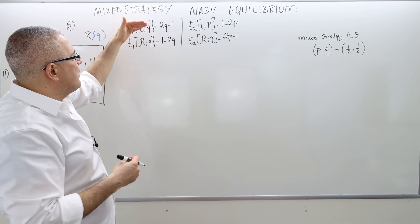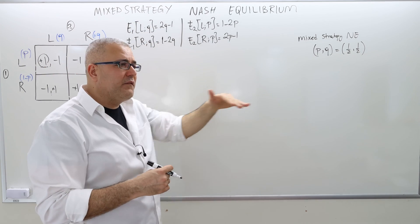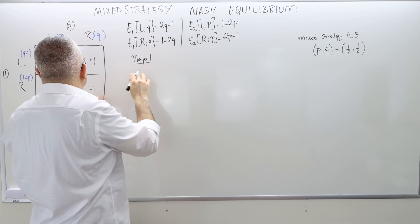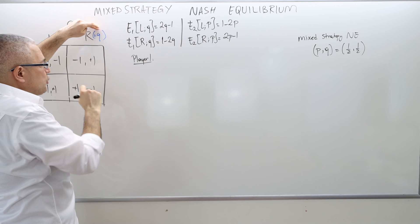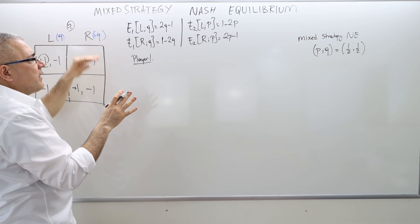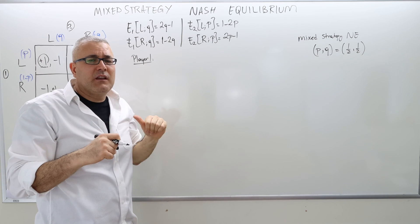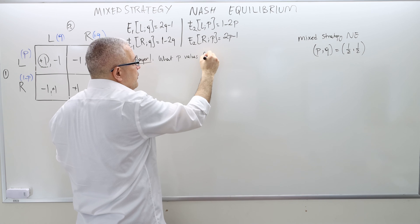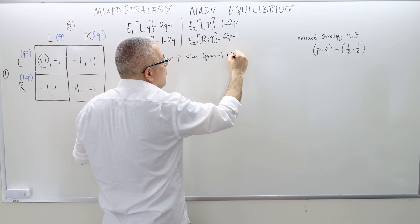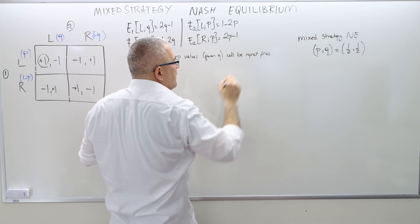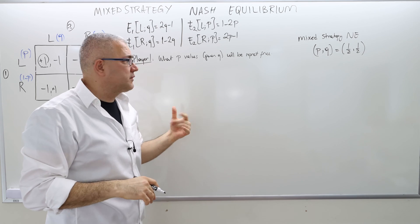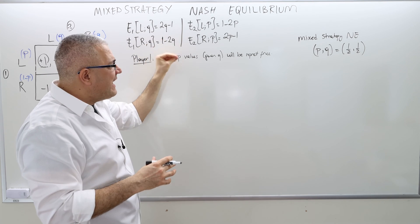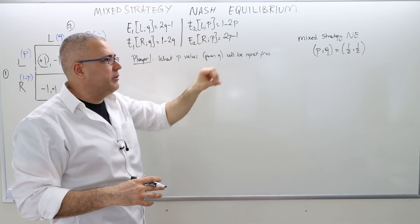What we do in this step is calculate the expected payoffs. For player one first: given that player two wrote Q, whatever that Q is, what P values given Q will be regret-free? More formally, and then for player two we'll do the symmetric version — given the P values, what Q will be regret-free?